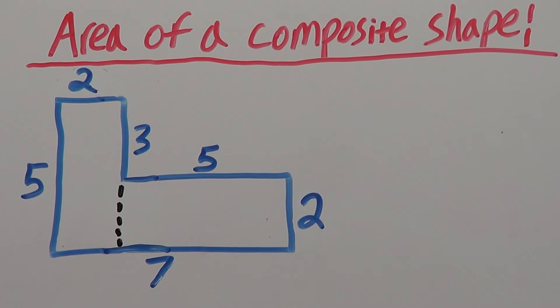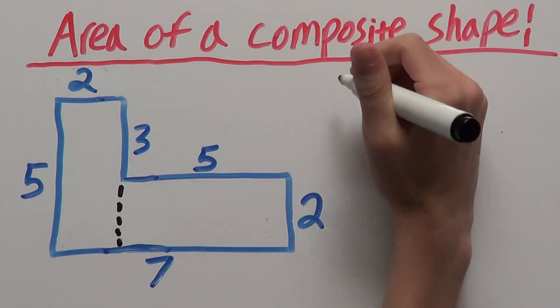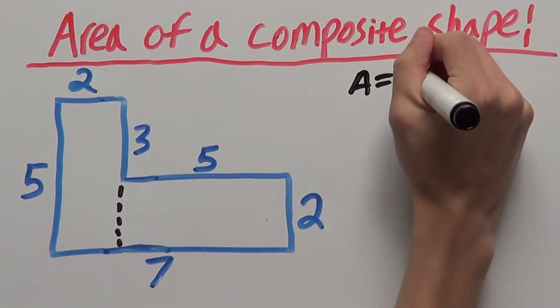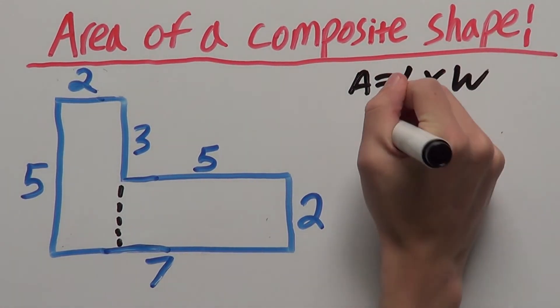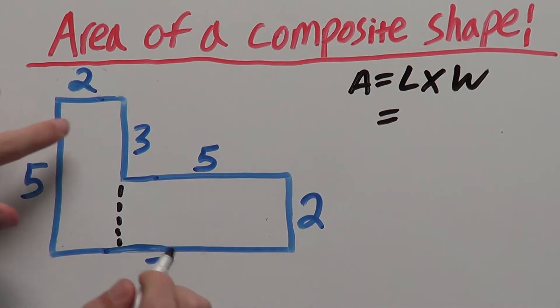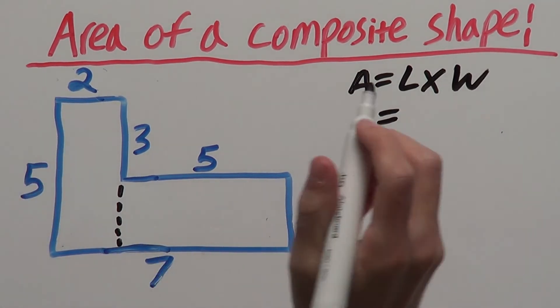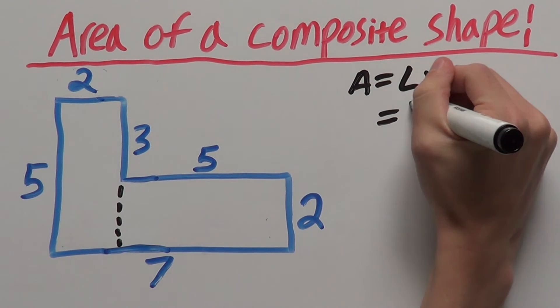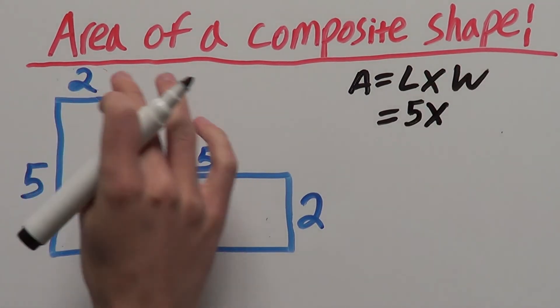So, let's first find the area of this rectangle. The formula for the area of a rectangle is area equals length times width. So, the area of this rectangle here will be length which is five times our width which is two.